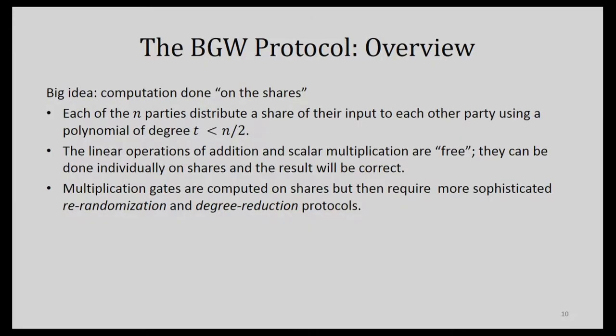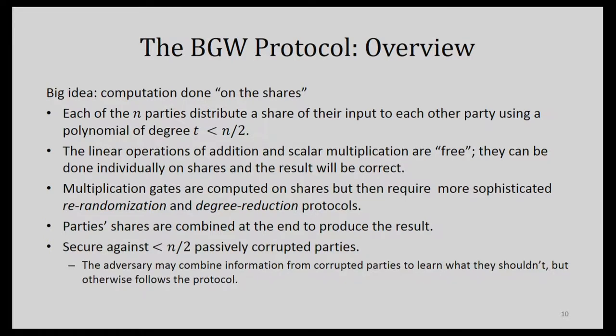The hard part of the protocol is when you hit a multiplication gate. Each party multiplies their shares together, but then you get into hot water because the result could be a higher degree polynomial and will not be randomly uniformly distributed in the same way. This is where it gets complicated — there are what's called re-randomization and degree reduction protocols at that point. At the end, the party shares are combined to produce the result. This is secure as long as fewer than half the parties are controlled by the adversary in the passive model.